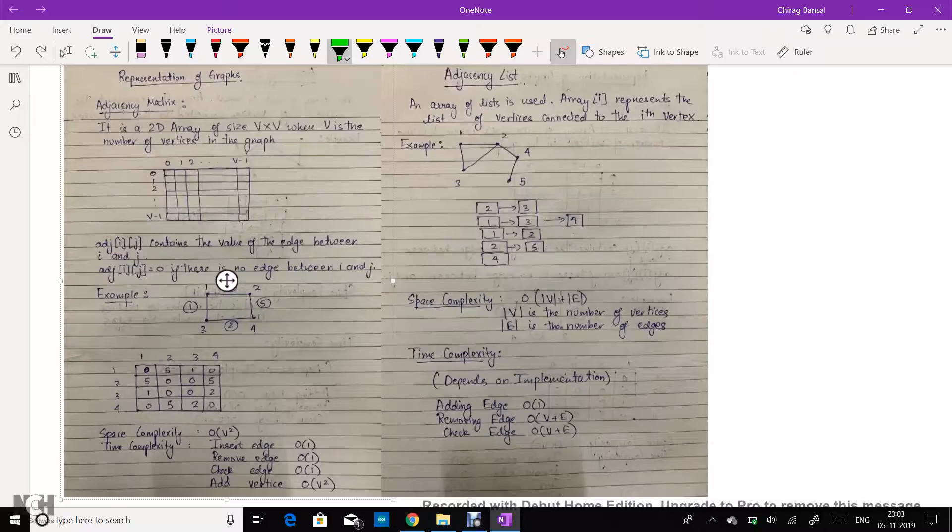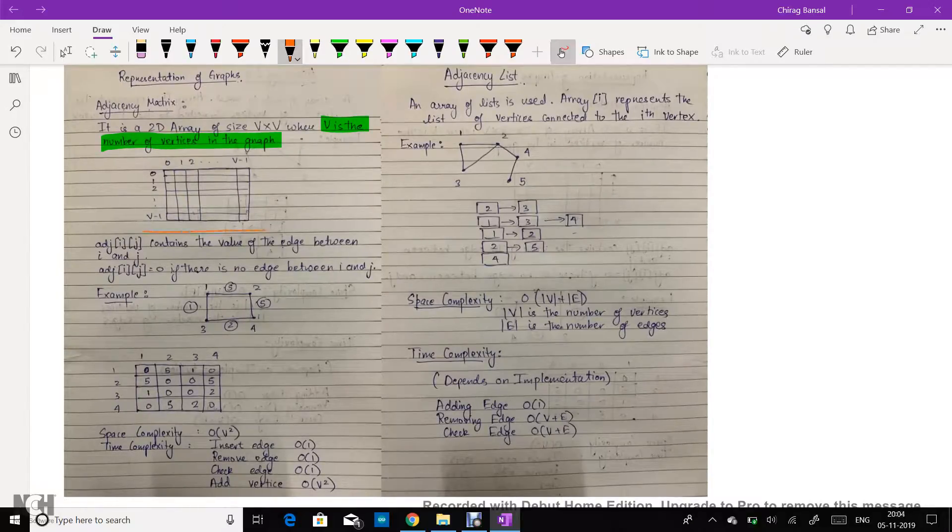In adjacency matrix we have a 2D array of size v cross v where v is the number of vertices in the graph. For example, here we have a 2D array of size v cross v.